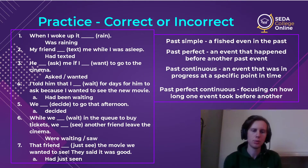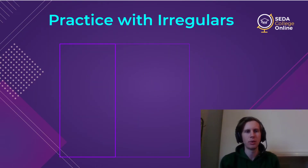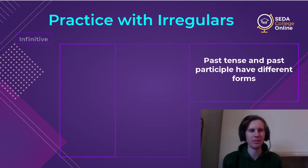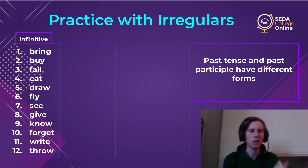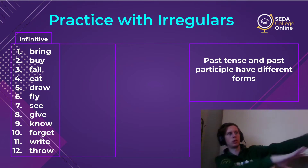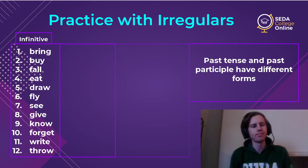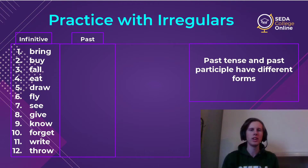Now let's practice some irregular verbs. I have 12 common verbs: bring, buy, fall, eat, draw, fly, see, give, know, forget, write, and throw. We're going to do the past tense form first — the irregular form instead of the regular -ed verb. I'll go through one at a time; try to guess the correct form before I reveal it.